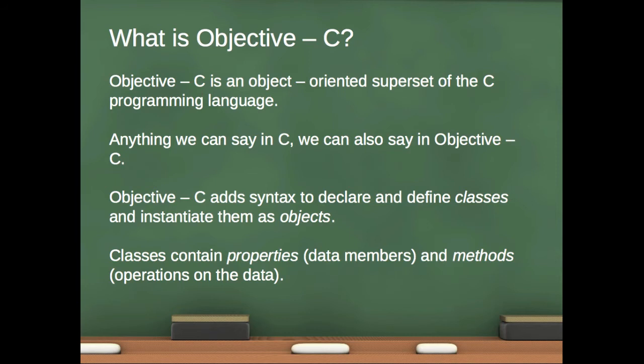What is Objective-C? It's an object-oriented superset of the C programming language. So if you know C, you'll find it very simple, mostly, to branch over into Objective-C. Anything we can say in C, we can also say in Objective-C. We have all the primitive types, we have arrays, we have structs, we have everything that we have in C, including pointers, but we add a layer of syntax to declare and define classes and instantiate them as objects. And if you don't know anything about object-oriented programming, that's okay — we're going to cover that using Objective-C as a springboard.